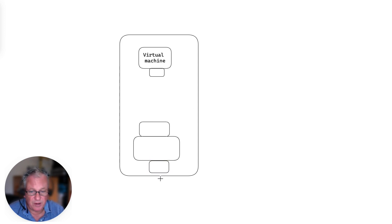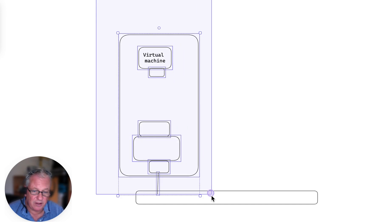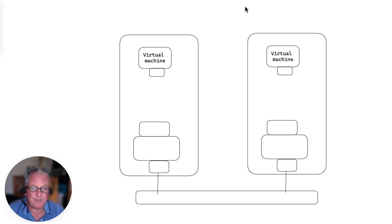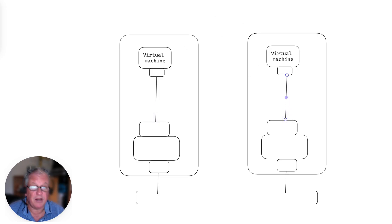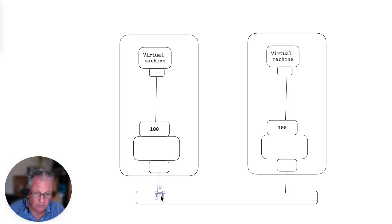This physical network adapter is attached to a physical switch. We have the same thing on the other side — two VMs on different hosts, and both virtual network adapters are attached to a port group. These port groups can be configured with a VLAN ID. So this is VLAN ID 100, and this is also VLAN ID 100.